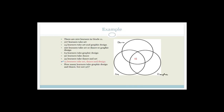Since we know that 15 is in the centre, we can work out the rest. 35 learners take dance and art, so the whole of that intersection has to equal 35. But 15 is already there, so what's left for dance and art only is 35 minus 15, which equals 20.